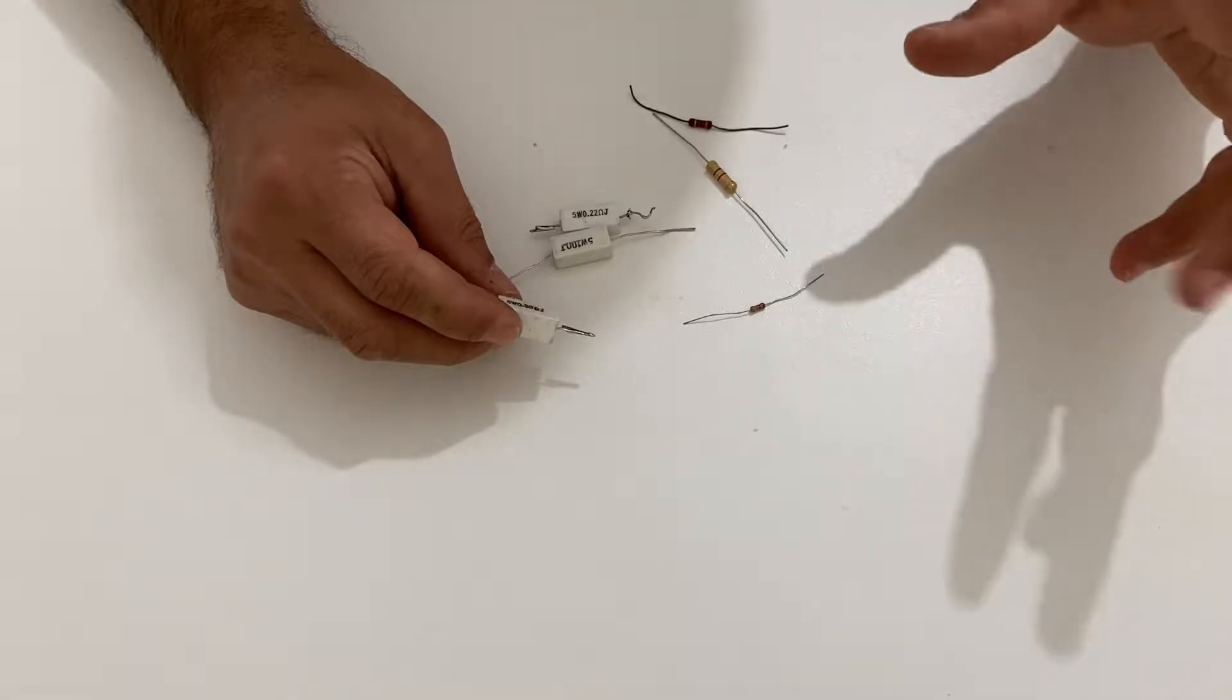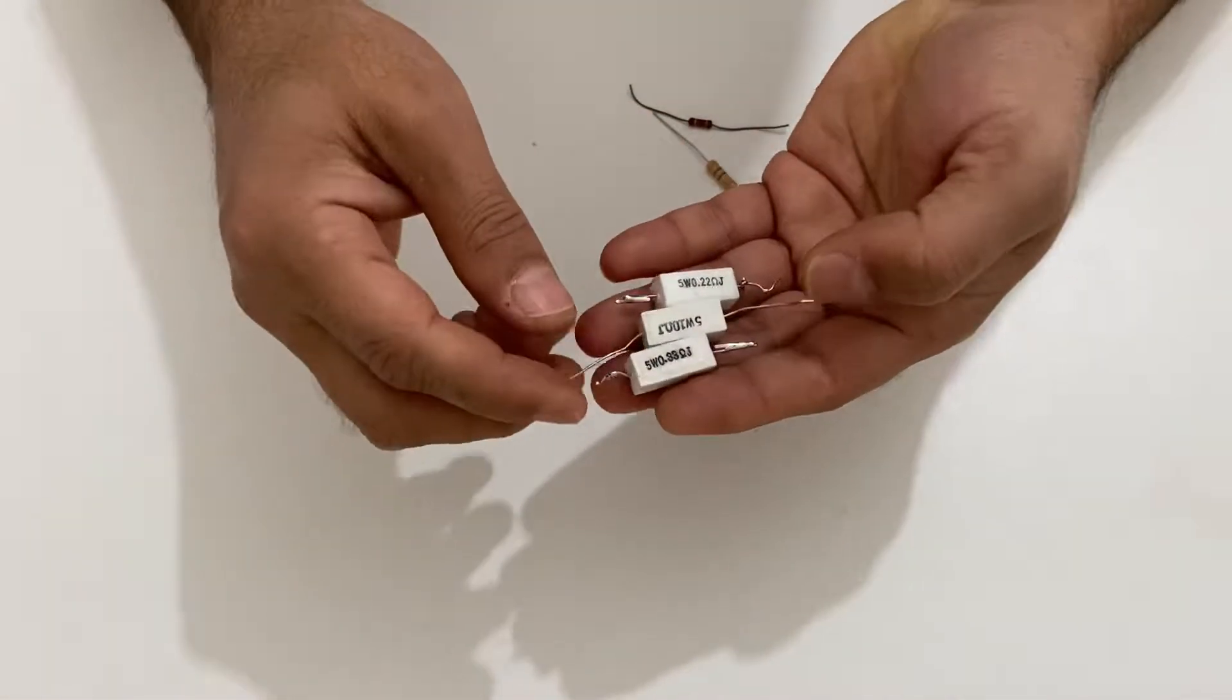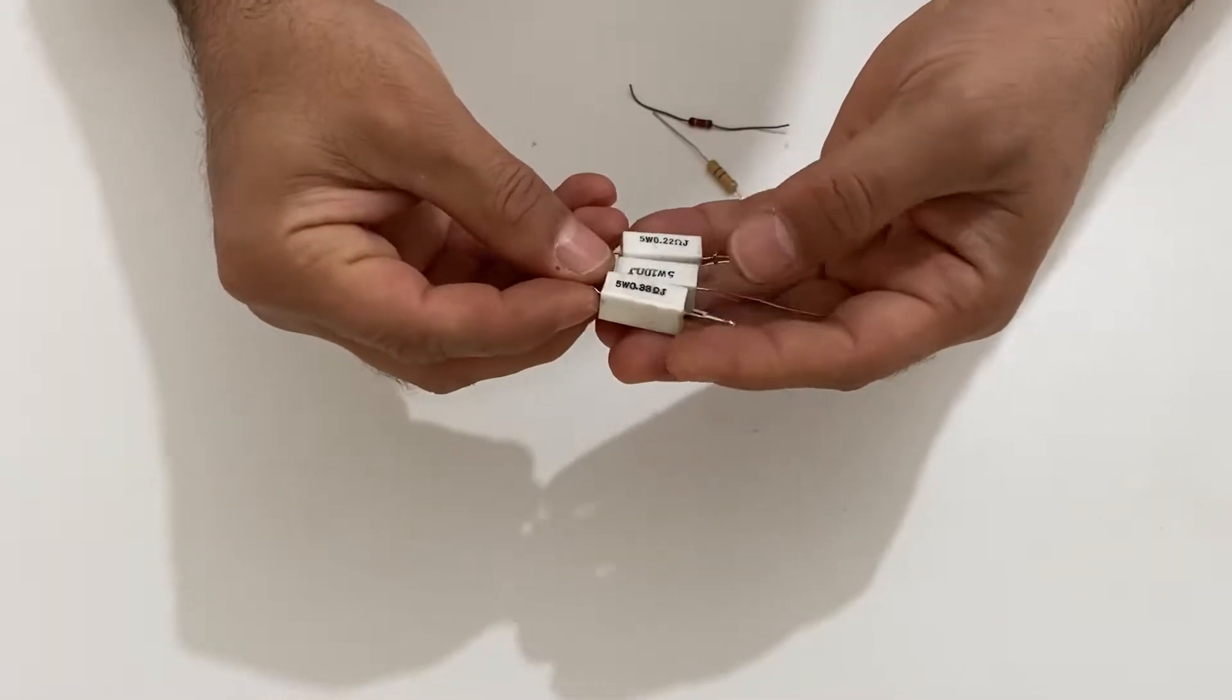Before we get started with our project, let me show you the types of resistors and talk about them a little bit. As you see, I have three resistors here. These are the rock or stone resistors, you can say that.